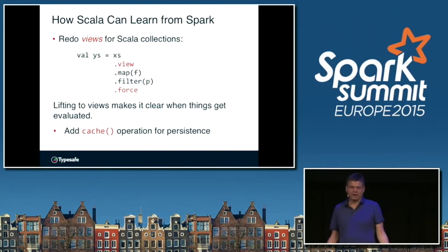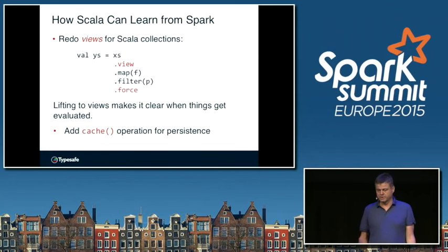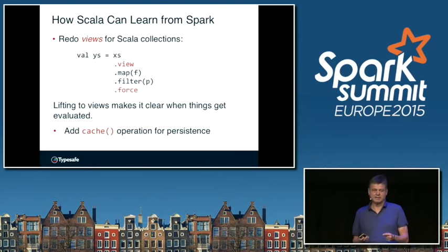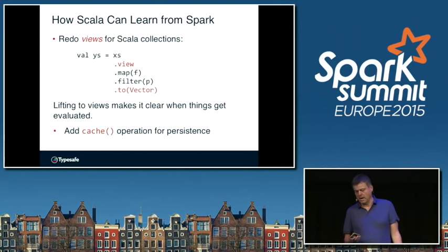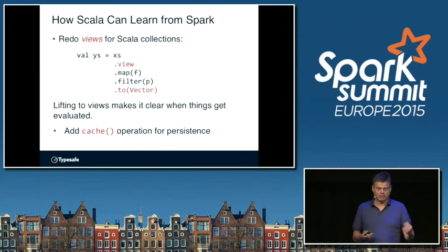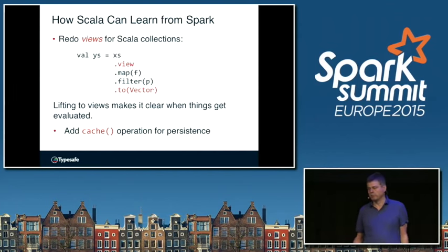What we are currently working on — in the evaluate-proposal stage — is to redo the concept of views for Scala collections. Here's how to get the lazy behavior of Spark in the next version of Scala collections: write xs.view, which turns it into a lazy collection. Now you can do a map and a filter without creating intermediate results — you're just adding to the recipe. At the end, write force, or convert to a collection of your choice with .to. Another thing we will gladly copy from Spark is the idea of using cache to persist a view — so far missing in Scala.